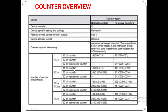Counter overview: there are different counters available — normal counters, retentive counters, and high-speed counters. Counter is denoted with C, device type is bit device, and device address format is decimal. Counter set point value entry is as a decimal integer constant; the set point can be set either directly in the instruction or indirectly in a data register — two data registers for 32-bit counters, one register for 16-bit counters.